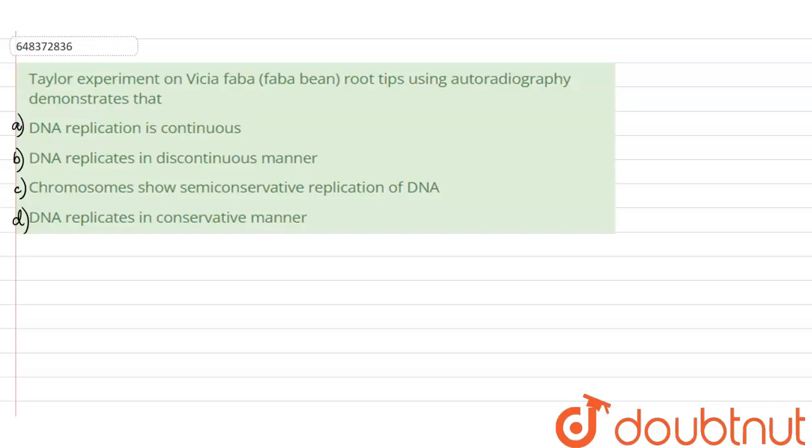Hello everyone, let's start with today's question. Today's question says that Taylor experimented on Vicia faba, which is known as faba bean root tips using autoradiography that demonstrates that: